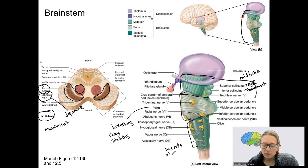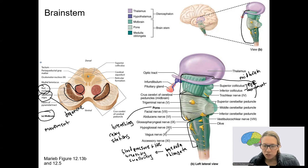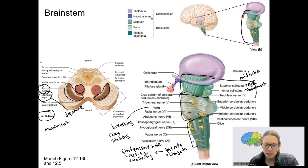The medulla oblongata — often just called the medulla — is involved in many involuntary functions, including blood pressure regulation, breathing, swallowing, and heart rate. The vagus nerve is a key cranial nerve associated with the medulla. All these cranial nerve functions relate to the medulla's role in controlling these vital involuntary processes.